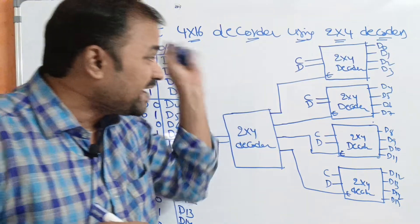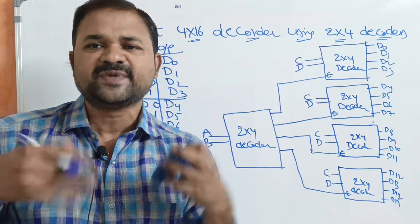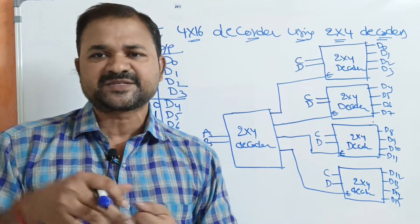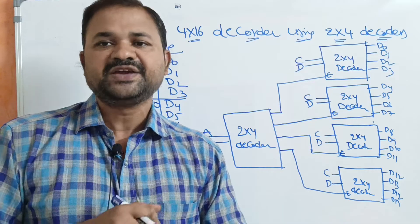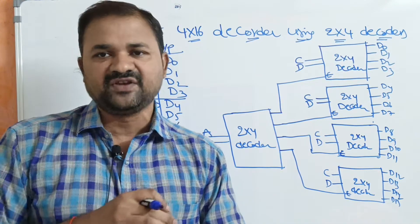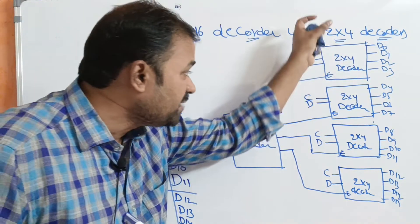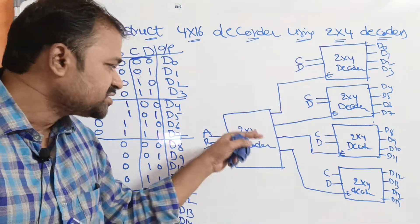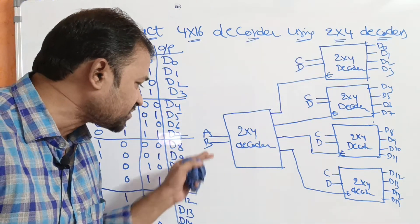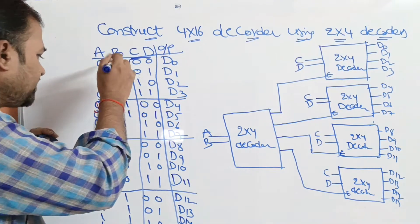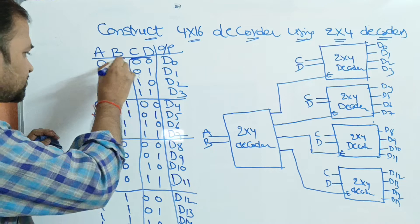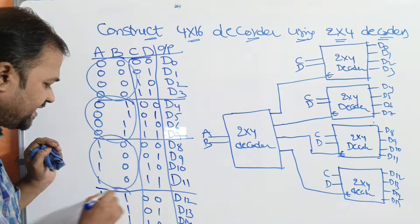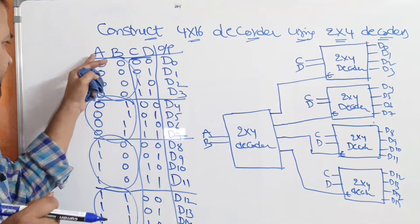In order to enable each 2 by 4 decoder, we must require an enable input. If the enable input is 0, then the corresponding decoder won't work. If the enable input is 1, then only the decoder will work. In order to enable all these decoders, we use one more 2 by 4 decoder. This fifth decoder takes inputs A and B — the first 2 bits. For the first 4 combinations A and B are 00, next 4 they are 01, next 4 they are 10, and the last 4 they are 11.